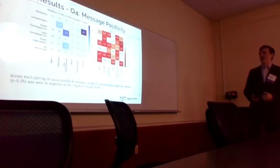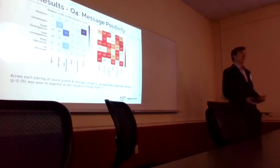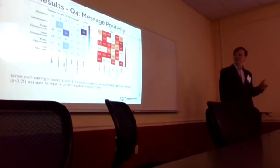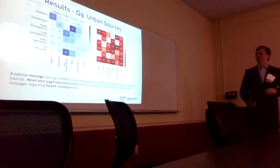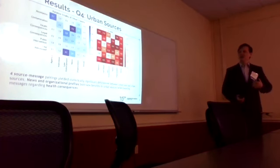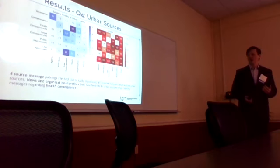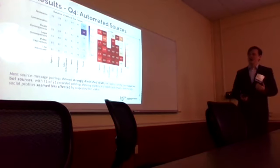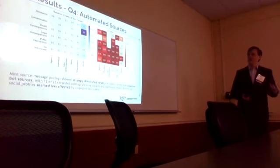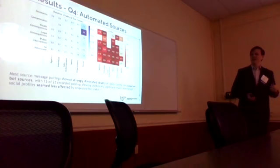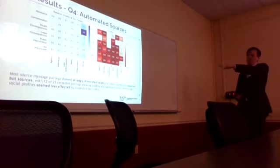Finally, we looked at factors that affect virality. We looked at positivity — there was no consistent tone showing a statistically significant impact on virality from positive or negative messages. We looked at urban sources: news and law enforcement did really well coming from an urban source, perhaps because city folk prefer to listen to city folk. We also looked at automated sources — these aren't necessarily malicious, some could just be services automatically retweeting news within a network, but there are obviously going to be bots. Every relatively official channel seemed to vastly suffer if it was automated, with the exception of social, where there wasn't a statistically significant difference.